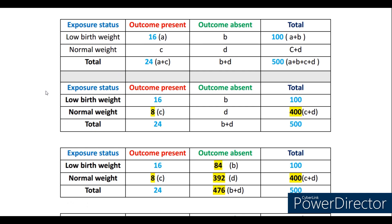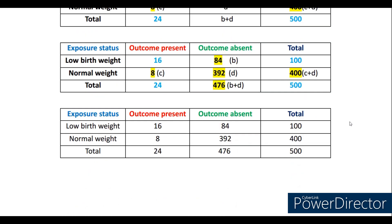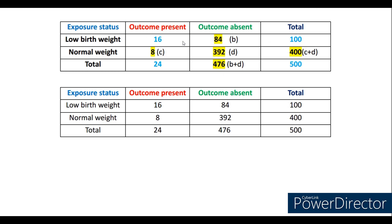Next, find the missing values. Looking at the total column vertically: a+b = 100 and a+b+c+d = 500, so c+d = 500 minus 100 = 400. In the outcome column: 24 minus 16 gives c = 8. Then, looking horizontally: b = 100 minus 16 = 84, and d = 400 minus 8 = 392. For the total outcome-absent column: 500 minus 24 = 476, which can also be verified as 84 plus 392 = 476. After calculating all values, always cross-check to minimize errors.